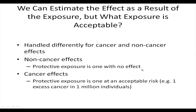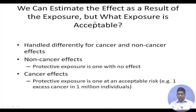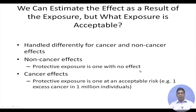From epidemiological studies you may only get a couple of data points at high exposure levels. The question then becomes: what will happen at lower exposure levels? We can estimate the effect as a result of exposure, but what exposure is acceptable? For non-cancer effects, we want a protective exposure — one with no effect showing up. For cancer effects, we accept an acceptable risk of one in a million.